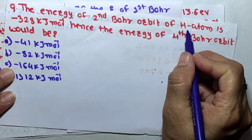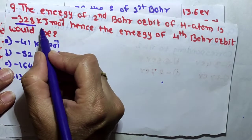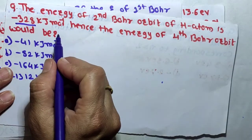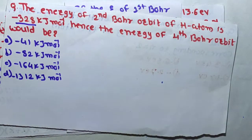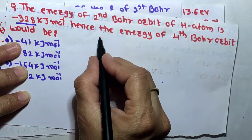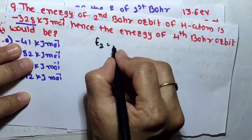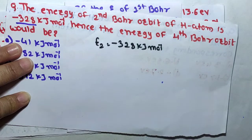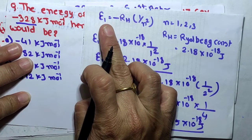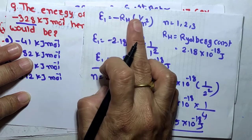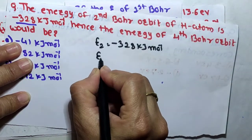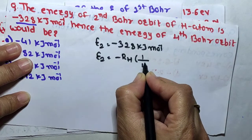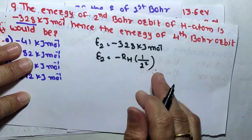MCQ 3: The energy of the second Bohr orbit of hydrogen atom is −328 kJ/mol. Hence the energy of the fourth Bohr orbit will be? We know En = −RH × (1/n²). So E2 = −RH × (1/4) = −328 kJ/mol. We need to find E4 = −RH × (1/16).